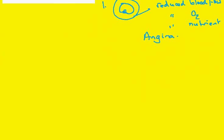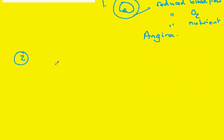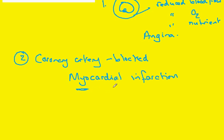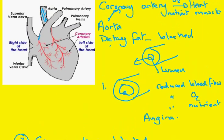A more serious version of this would be where the coronary artery is completely blocked, interrupting the blood flow. This is a condition called myocardial infarction. Myo meaning muscle, cardial referring to the heart, and infarction refers to the interrupted blood flow. Let's return to the diagram to see the effects of myocardial infarction.